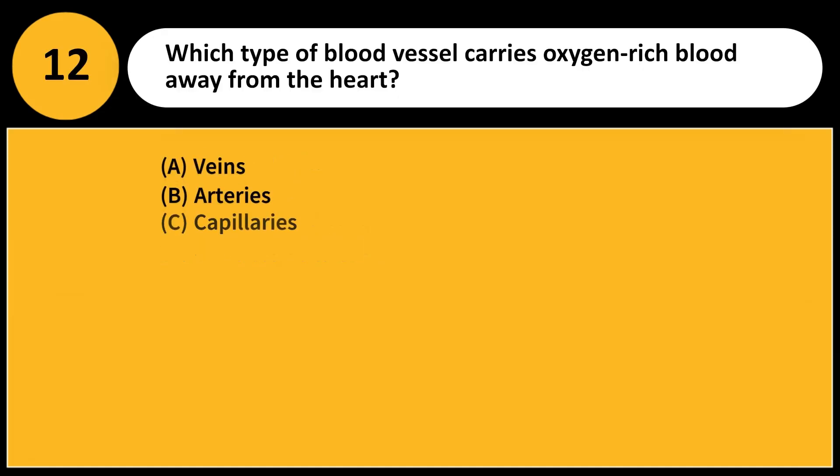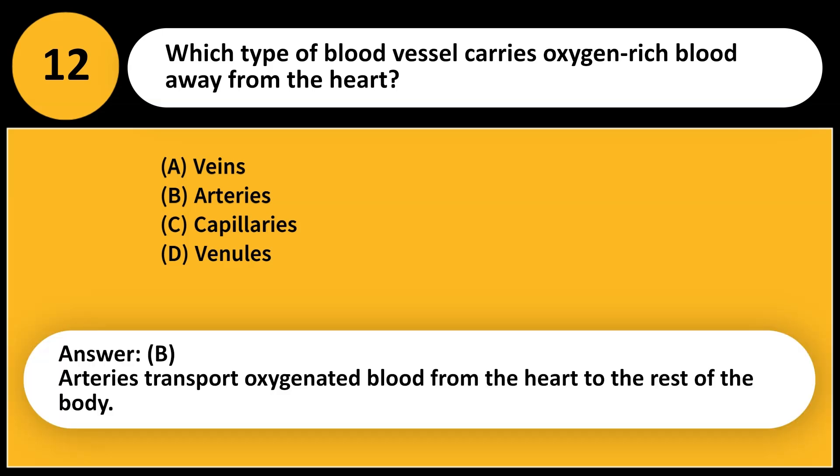Which type of blood vessel carries oxygen-rich blood away from the heart? A. Veins. B. Arteries. C. Capillaries. D. Venules. Answer: B. Arteries transport oxygenated blood from the heart to the rest of the body.